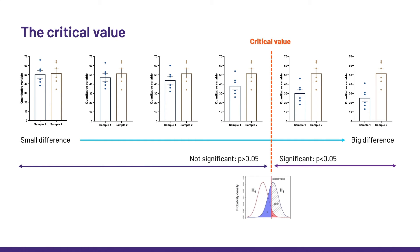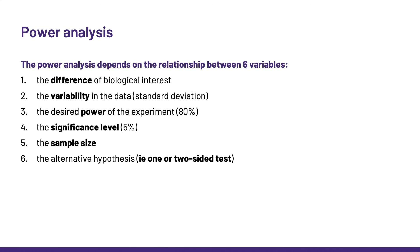That critical value is of statistical nature, as it is calculated using the information that matters: namely, the size of the difference, the sample size on which we build the confidence we have in that difference, and what we choose to call significant. Now, a power analysis is the relationship between six variables: the difference of biological interest, the variability of the data — both of which together give us the effect size — the desired power, the significance level, the sample size, and the alternative hypothesis.